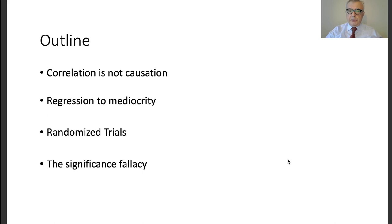Here is the organization. We will touch four items: the first one is correlation is not causation; second, regression to mediocrity; third, the role of randomized trials; and fourth, the significance fallacy. Today we will talk about correlation and causation.